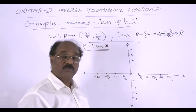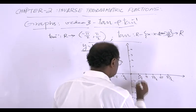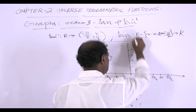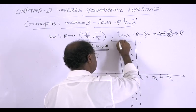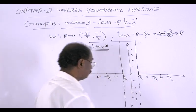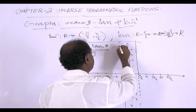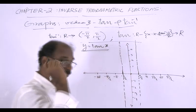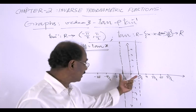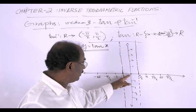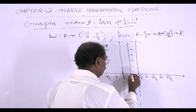Now, consider the portion of the graph between −π/2 and +π/2. Both points ±π/2 are excluded, so those boundary lines are excluded. In this interval, when x equals 0, y equals tan(0) equals 0, so the graph passes through the origin.